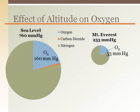It gets worse on the top of Mount Everest. The atmospheric pressure is 253 mmHg, which means that you can only bring in 53 mmHg of oxygen for each breath. This is barely enough to keep you alive.